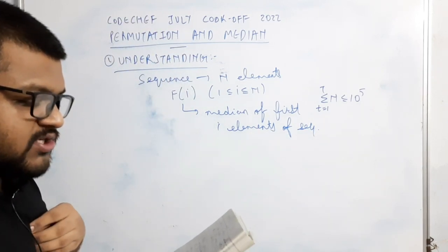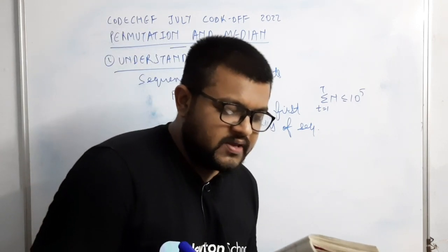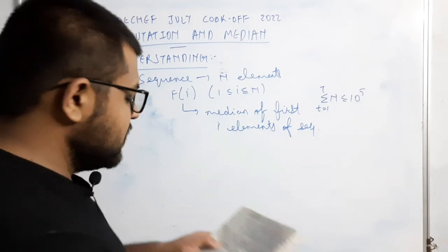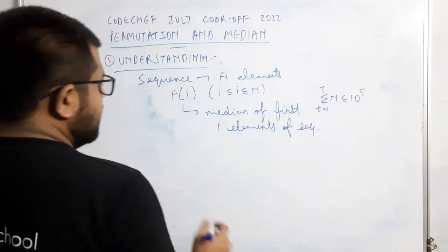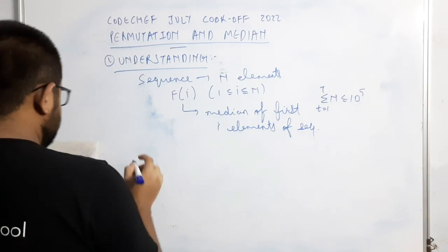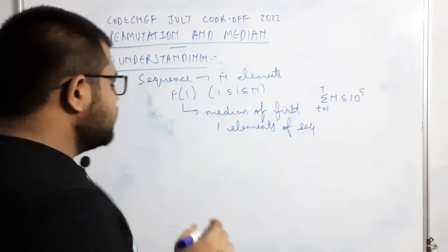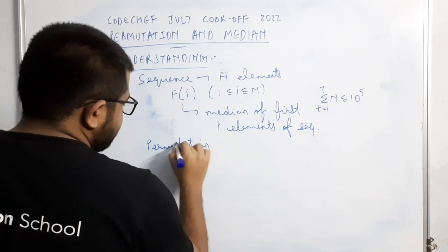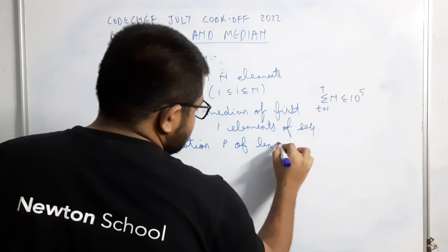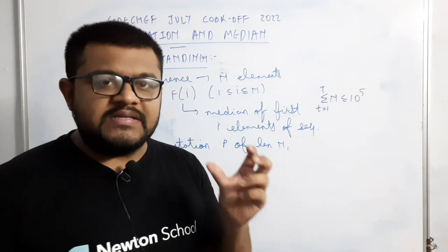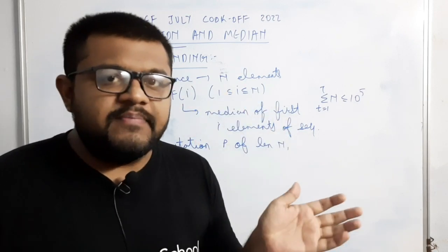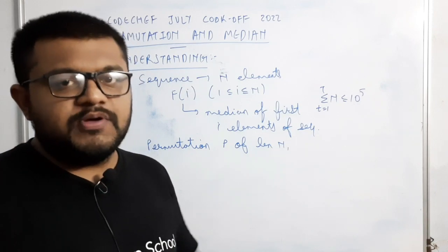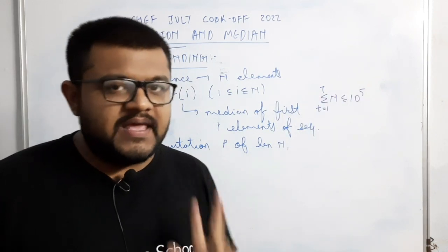Chef wants to get a permutation P of length n such that P(i) equals f(i) for all i between 1 to n. Can you help Chef in achieving this? A permutation P of length n means an array jisme pehle n elements hon exactly once aur unka order kuch bhi ho sakta hai, matlab 1 se lekar n tak sare elements exactly ek baar aane chahiye.